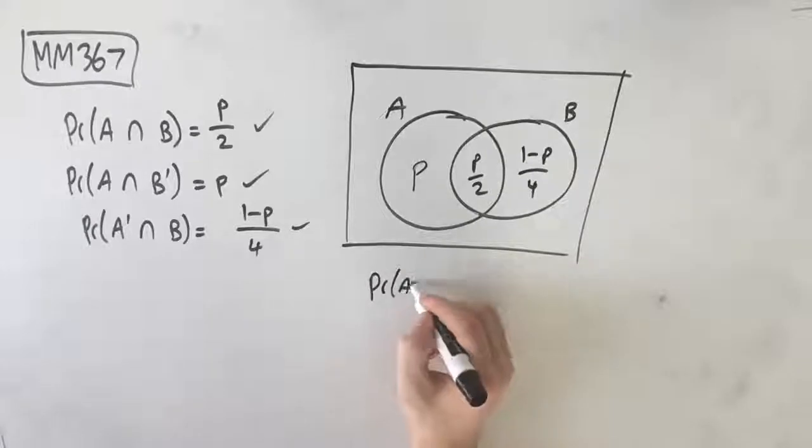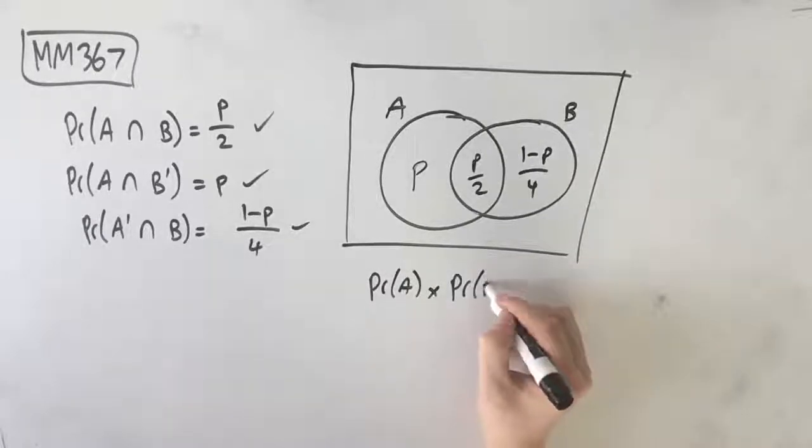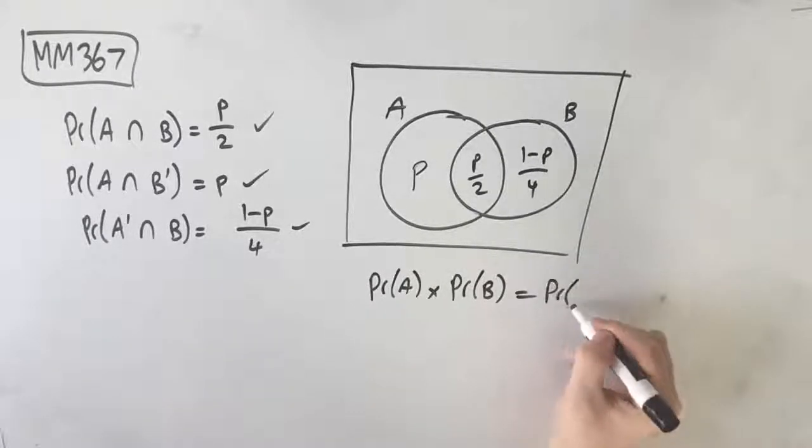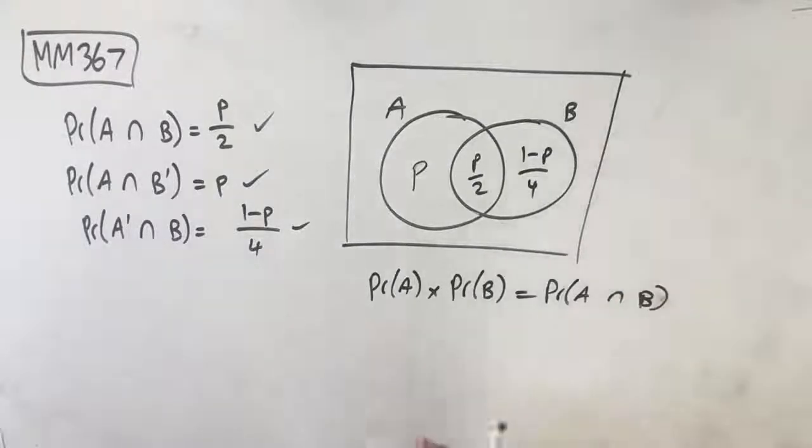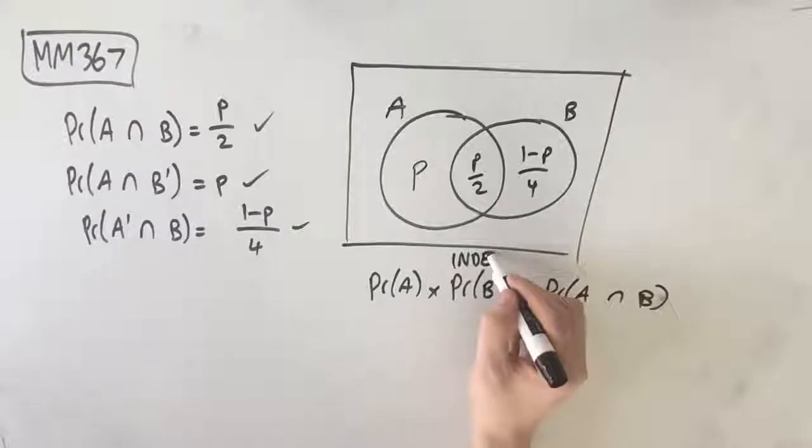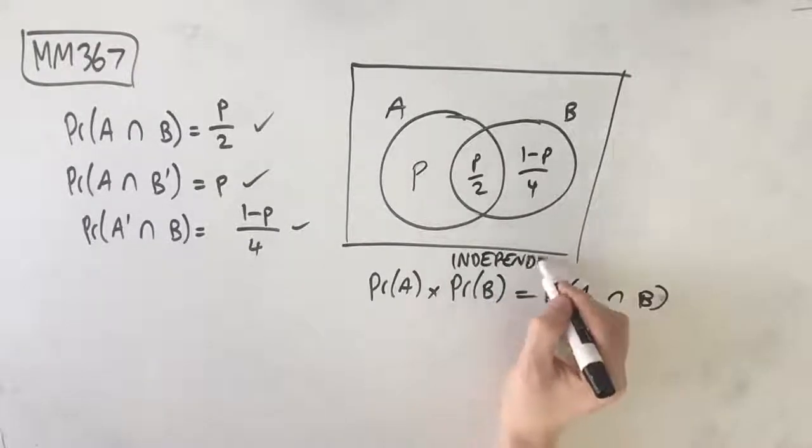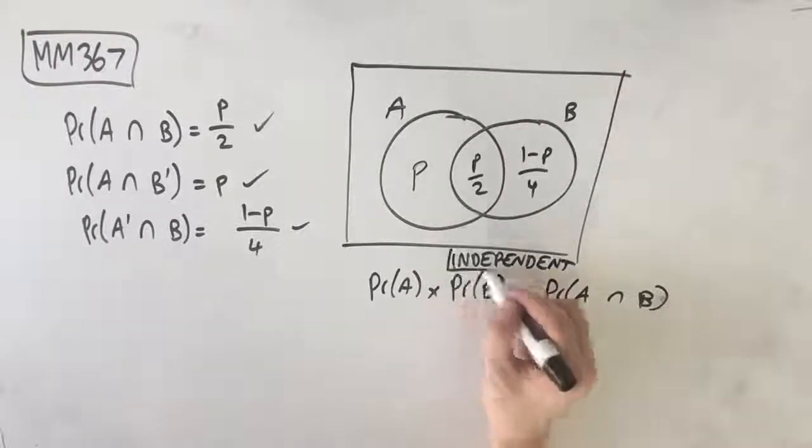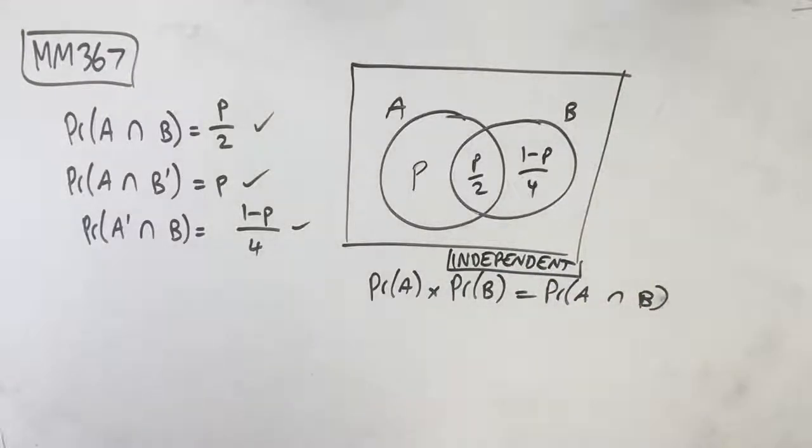...the probability of A times the probability of B equals the probability of A intersect B. That's the law of independent probability. If you haven't seen this before, write this down, chuck it in your cheat sheet, do whatever you need to memorize this. If they're independent, this is the formula that it follows.